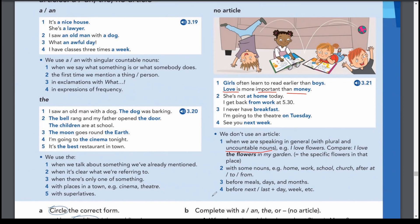The second case of no article is with specific nouns like 'home,' 'work,' 'school,' and 'church,' used after 'at,' 'to,' or 'from.' For example: 'at home,' 'at work,' 'at school,' 'at church'; 'to home,' 'to work,' 'to school'; 'from home,' 'from work,' 'from school.' When we use these words in a general sense, there is no article: 'She is not at home today,' 'I get back from work at 5:30.'